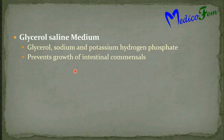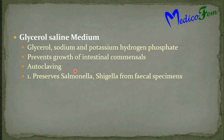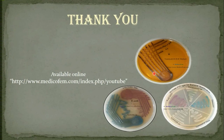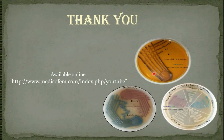Glycerol saline contains glycerol, sodium and potassium hydrogen phosphate. It prevents the growth of intestinal commensals. It is sterilized by autoclaving. It preserves Salmonella and Shigella in fecal specimens.